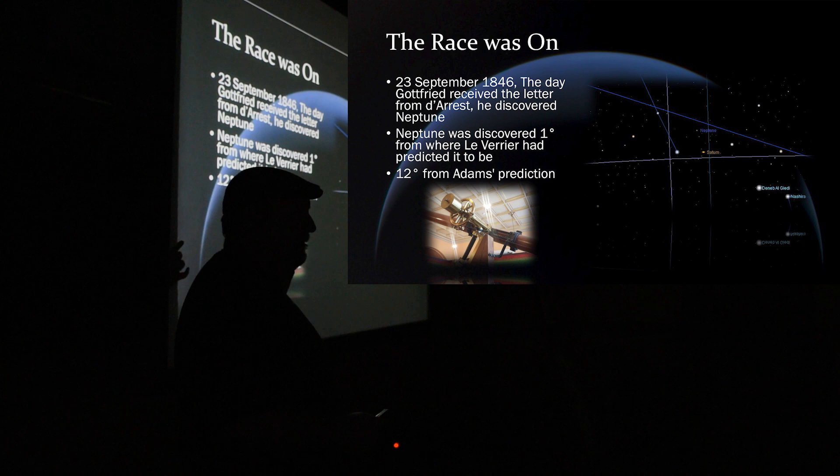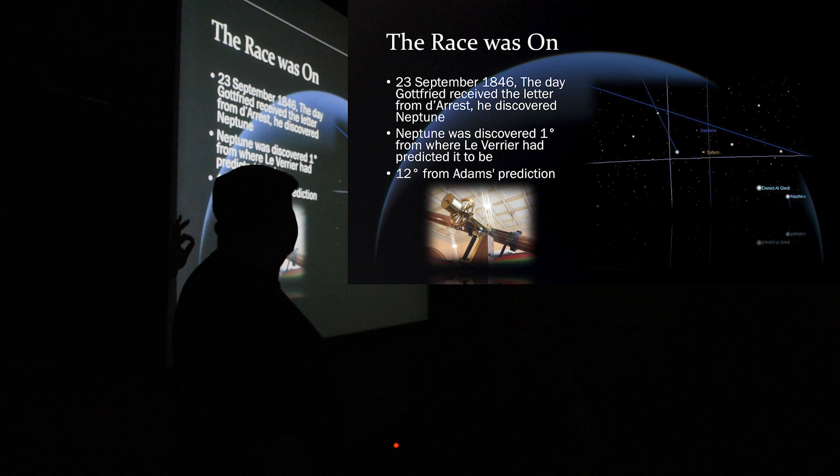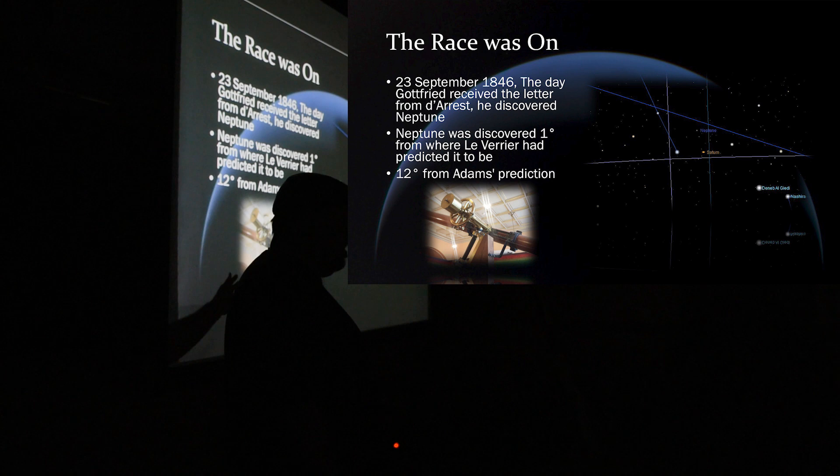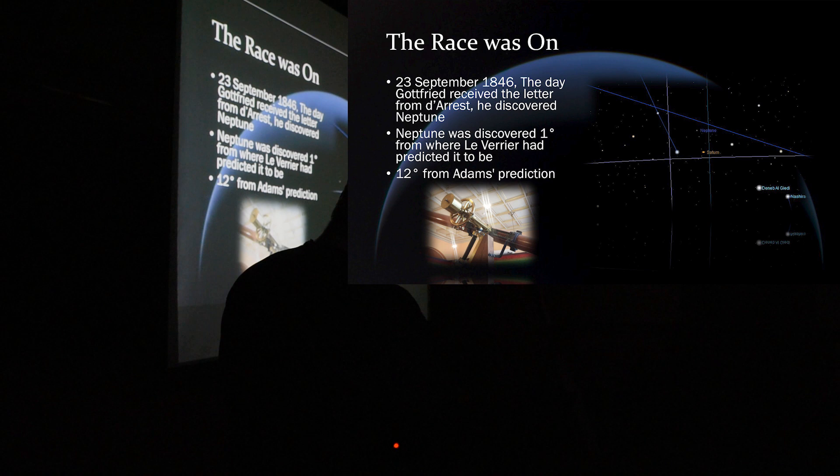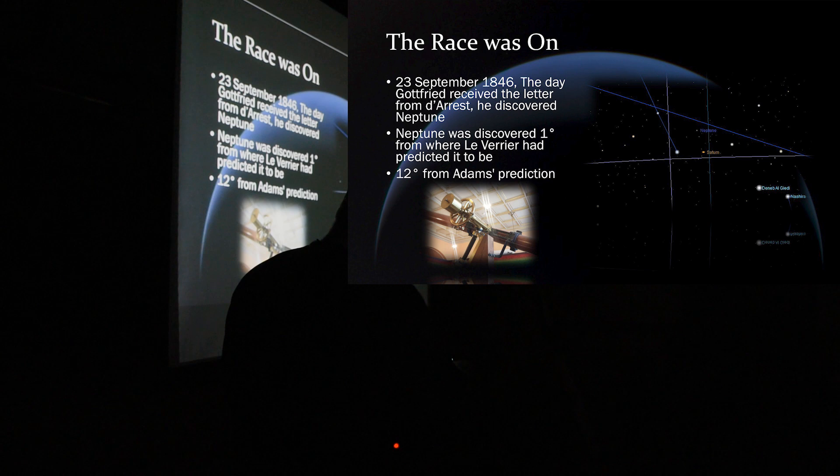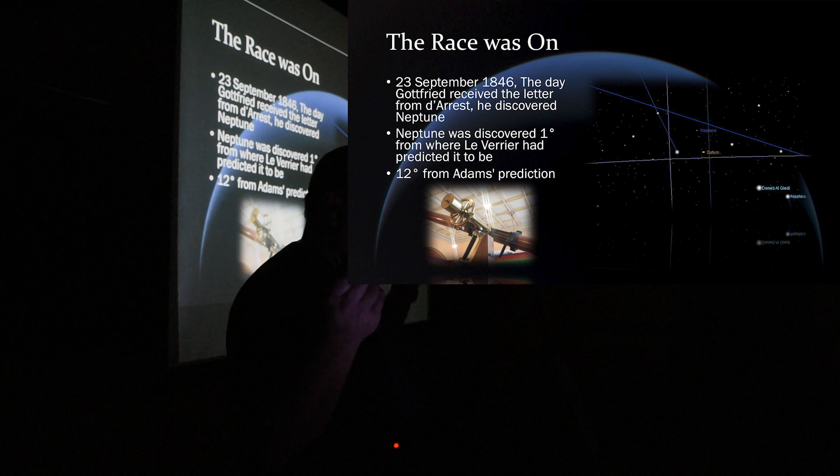So, Le Verrier's prediction was much closer. It was one degree off of where it actually was. Adams was about 12 degrees off. This is, I went into the Sky X, and I pulled back the time to 23rd of September, 1846, and that's where Neptune was. And this is Capricorn over here, and this is Aquarius up here. So, Neptune was discovered at this point in time. I bet you they took their telescope and looked at Saturn just for good measure, because Saturn's so beautiful to look at. So, that's kind of neat, though, that Saturn was very close to where Neptune was.